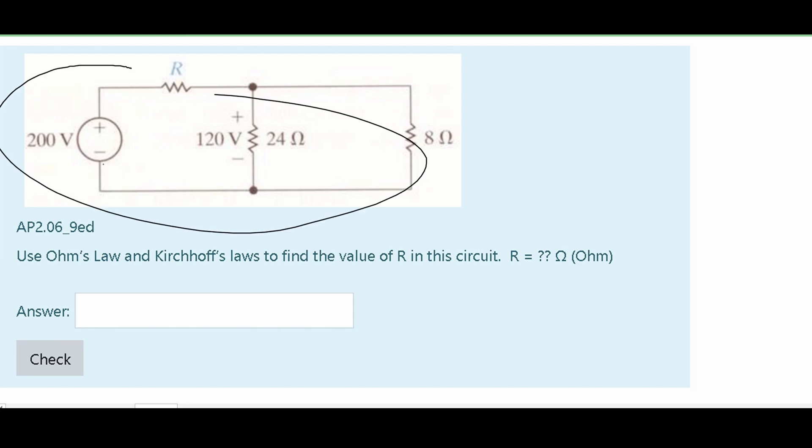In this problem, we are given a diagram and asked to use Ohm's law and Kirchhoff's laws to find the value of R in this circuit, R being our resistor up top right here. This is a build-up from a couple other problems. Those problems are featured in a playlist linked below, as well as the notes that will help us solve this problem.